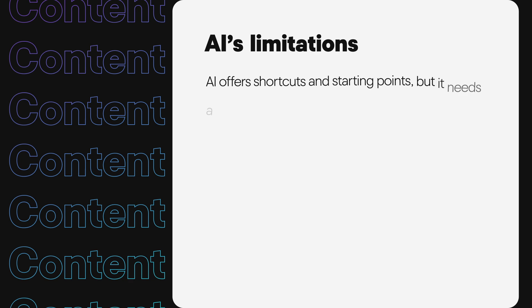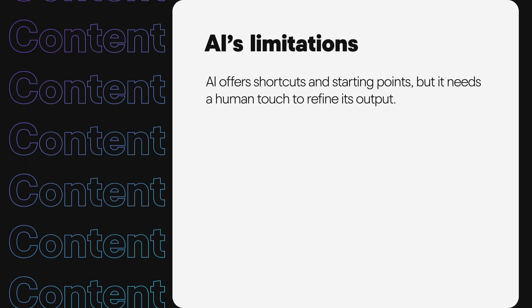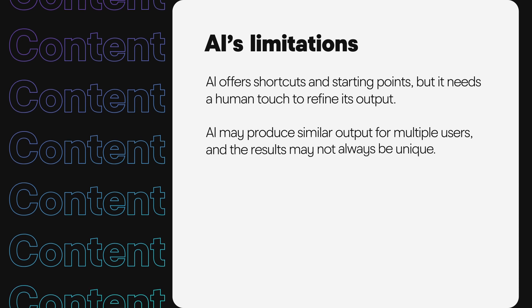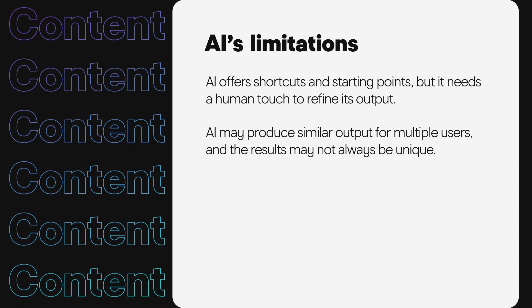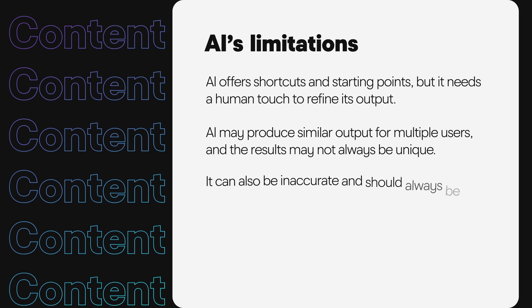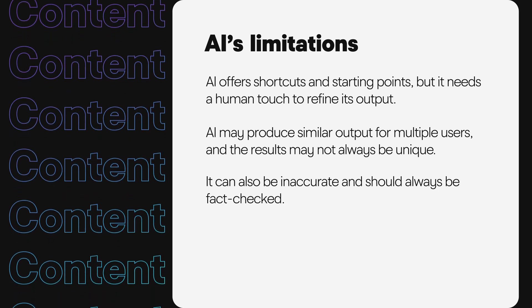When using AI, be aware of its limitations. AI offers shortcuts and starting points, but it needs a human touch to refine its output. AI may produce similar output for multiple users, and the results may not always be unique. It can also be inaccurate and should always be fact-checked. The best way to avoid errors is to use AI as a starting point. Rewrite and infuse AI-generated content with your unique brand personality and positioning.